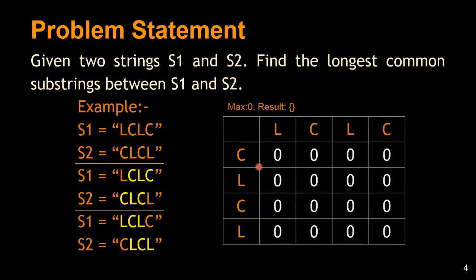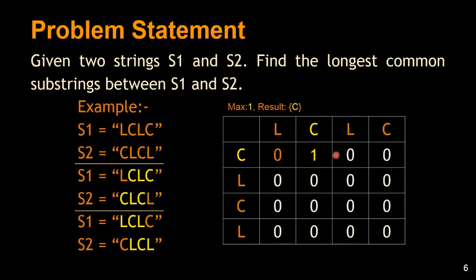Starting the comparison: 'C' equal to 'L'? No. 'C' equal to 'C'? Yes, so we increment to one. We have a common substring of length one, and the result set contains that substring. We also update the maximum length of the common substring and the string we have at that point.